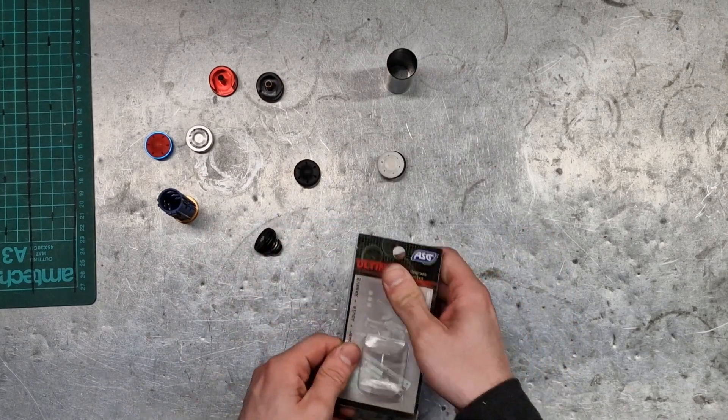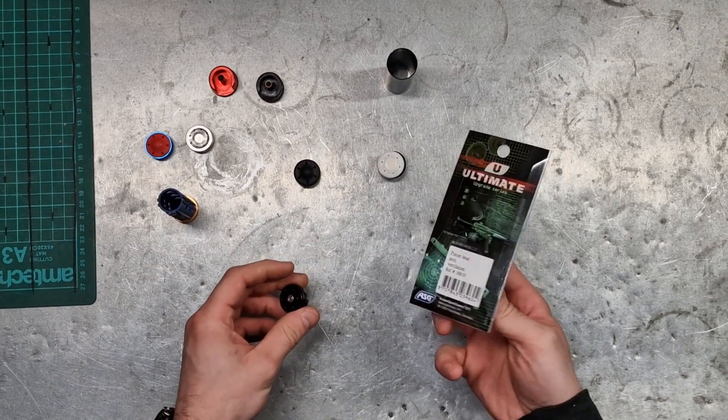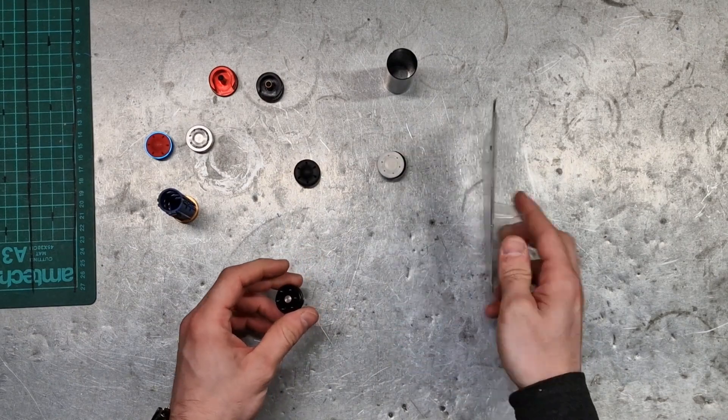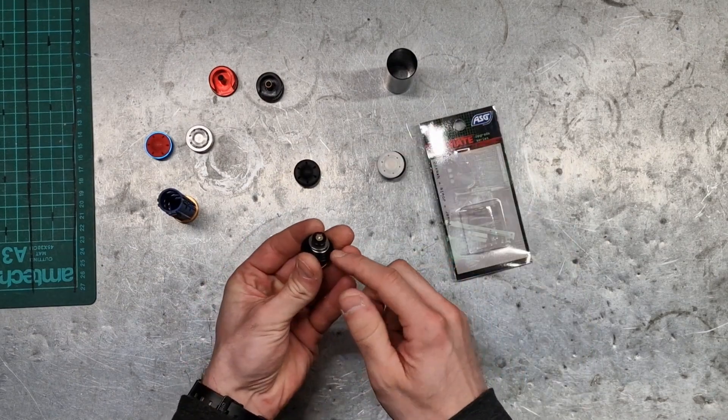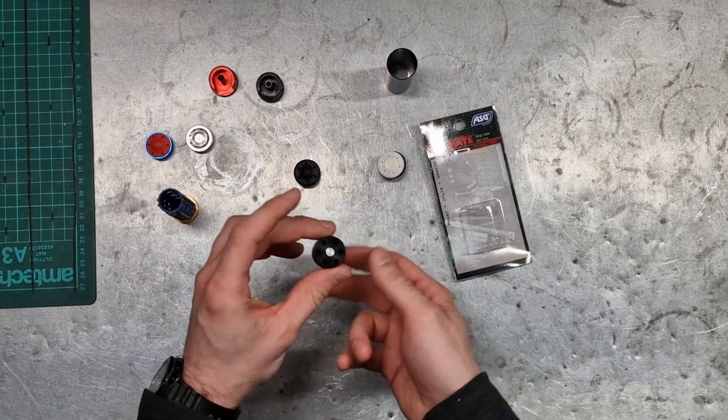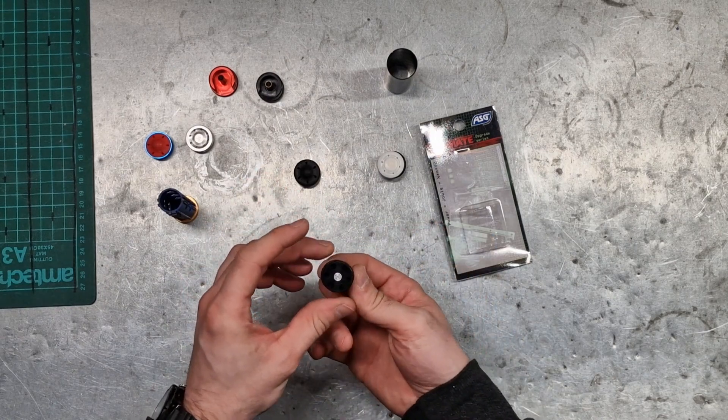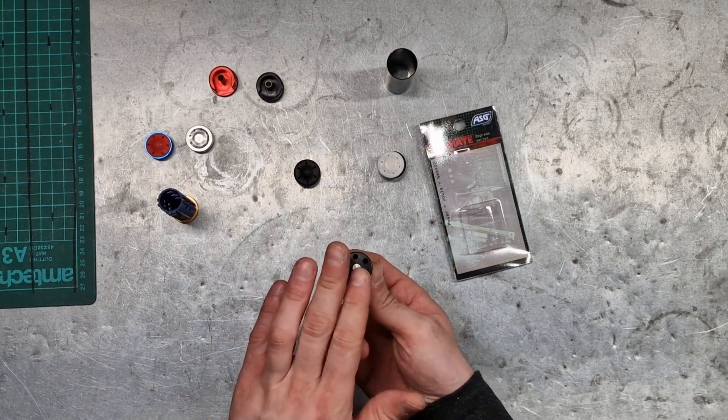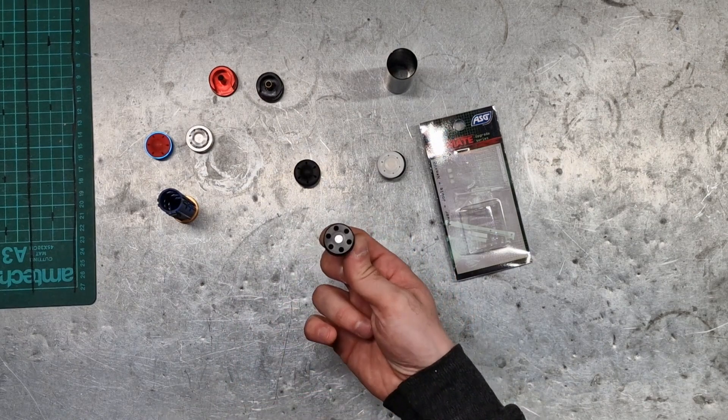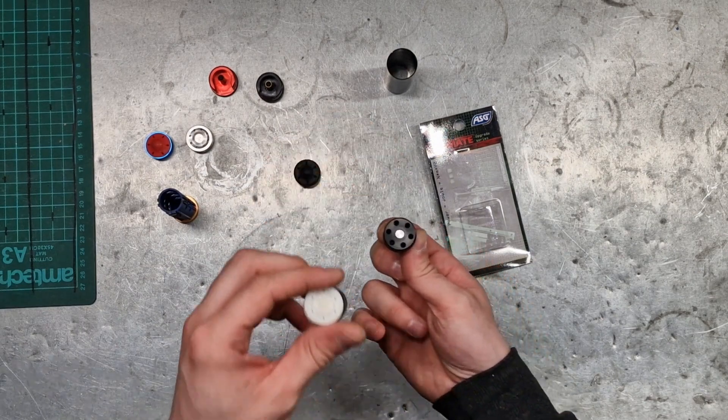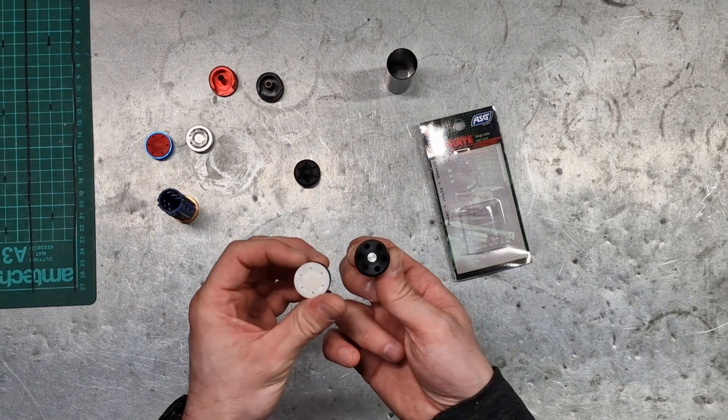This is the ASG POM vented piston head. It's got a set of ball bearings on the back, comes with all the gubbins you need, gives a nice consistent air seal. Every time I've had none of these fail. They have changed the design recently to more mirror this SHS style sort of new pro look and it's also just as reliable, so I'd recommend one of those.